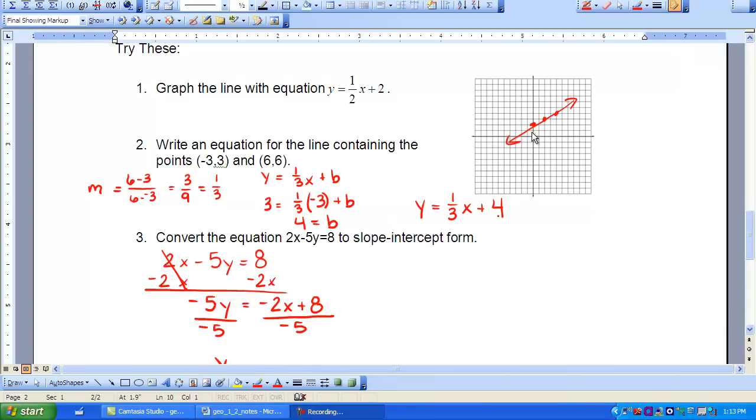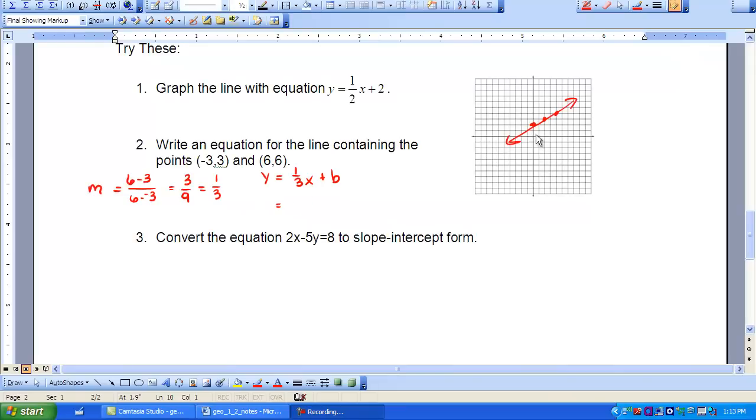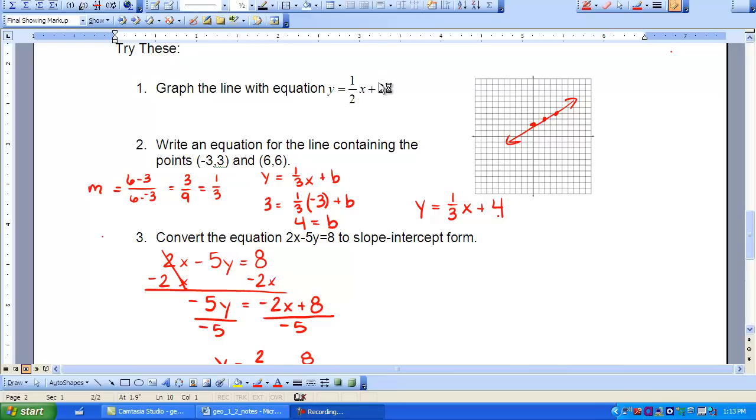As you can see here, I have graphed this equation, Y equals 1 half X plus 2. It had a Y intercept of 2, so I plotted my point at 2, and it had a slope of 1 half. So that means it has a vertical movement of 1 and a horizontal movement of 2. Vertical movement 1, horizontal of 2, and then I connected my line.